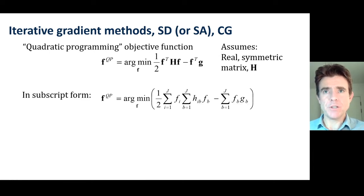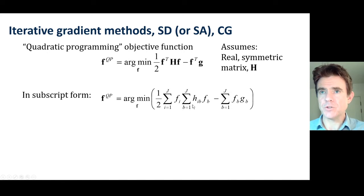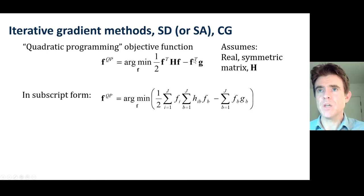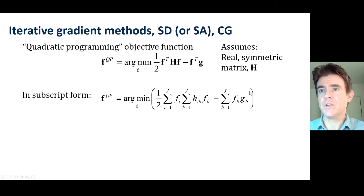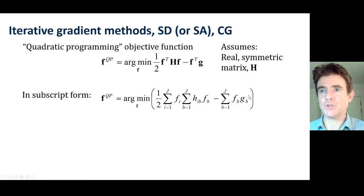Putting that into subscript form to help with the derivation: the term HF is just matrix-vector multiplication. The scalar product of F with that result means multiplying element by element the output of HF — that's just rewriting in explicit subscript notation. The second term is just a scalar product between the image estimate F and the back-projected data G — element-by-element multiplication followed by summation.